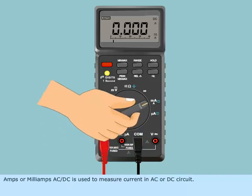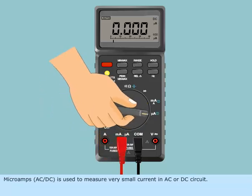Amps or milliamps AC or DC is used to measure current in AC or DC circuit. Micro Amps AC or DC is used to measure very small current in AC or DC circuit.